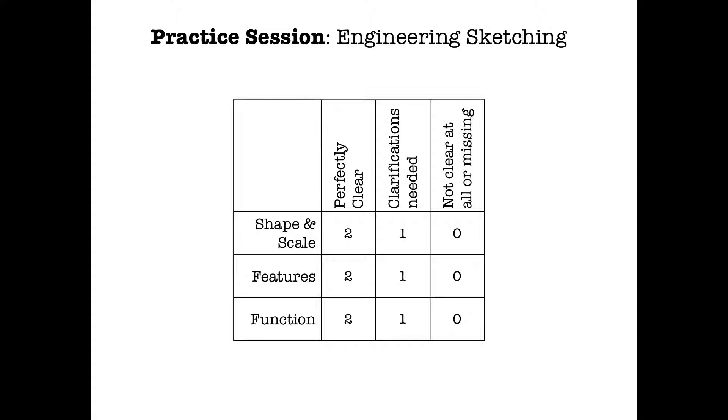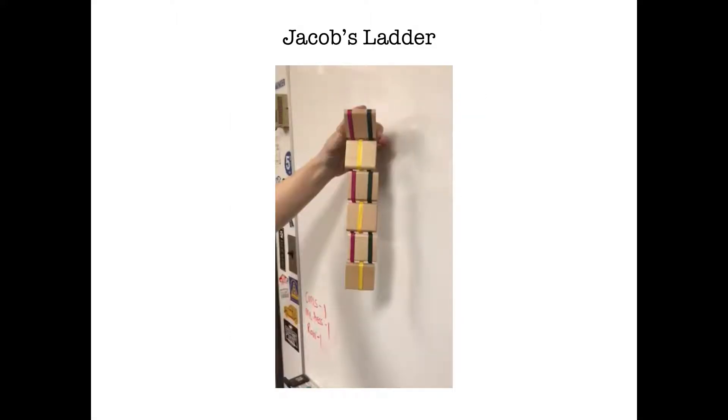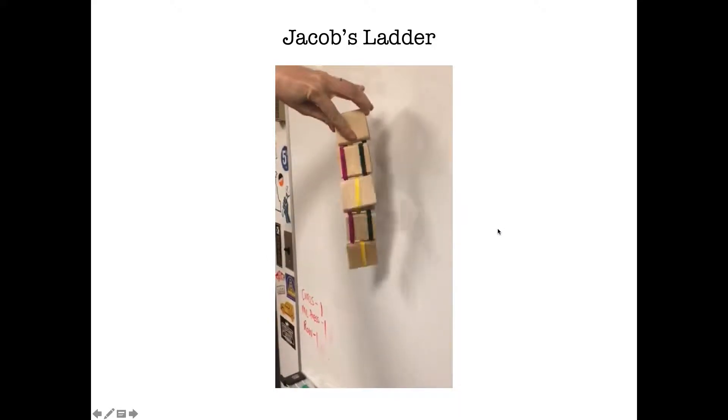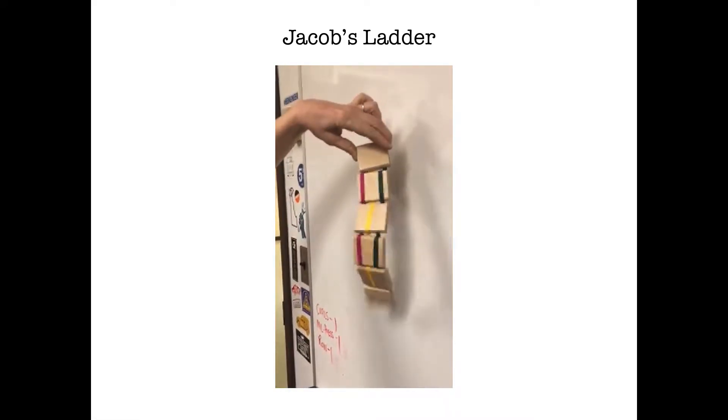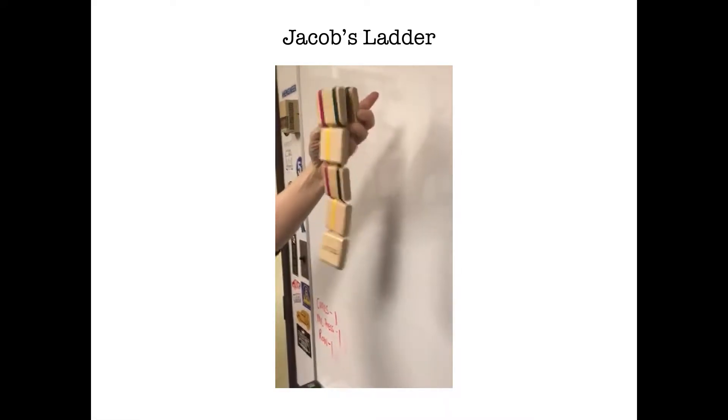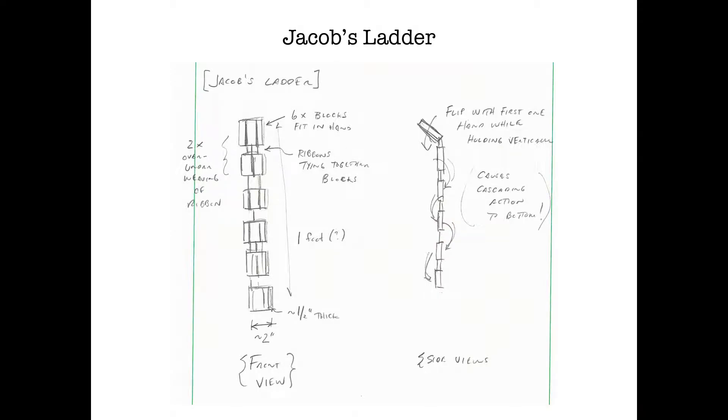that we're communicating any key features of the design or key components, and that it's clear how the design functions. So let's do one that we did in class. This is a review. This is the Jacob's Ladder. We all remember that from lecture. Now let's look at the sketch here. So this would be the sketch for the Jacob's Ladder.